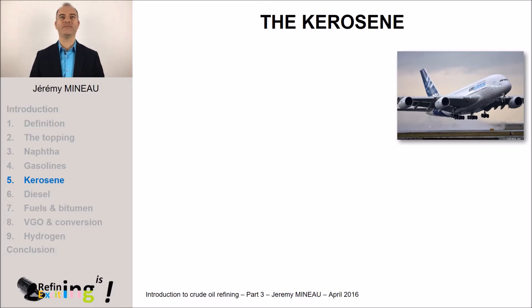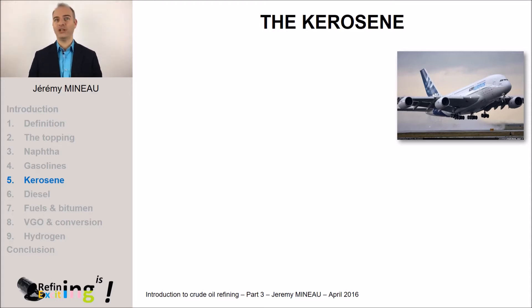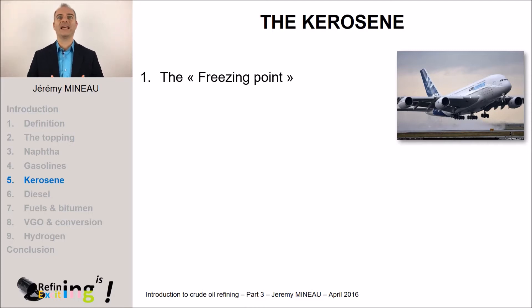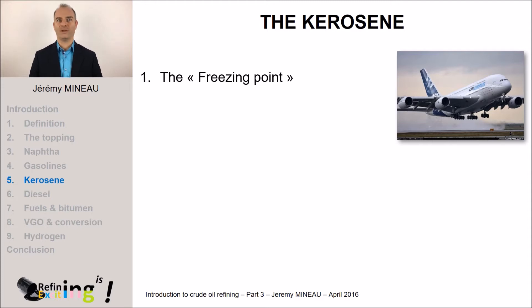As for the gasoline, let's focus on the main properties imposed by aircraft manufacturers to the refiner. There are three main properties for jet fuels. The first one is the freezing point. When an aircraft is in the air, the outside temperature can be very low, but even in these conditions of extreme low temperatures, the kerosene has to remain perfectly fluid. In other words, molecules shall not begin to solidify or to crystallize. The regulation imposes that the temperature at which molecules can start crystallizing shall be below minus 47 degrees.